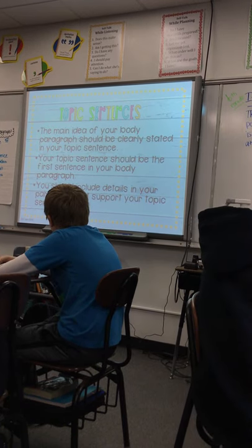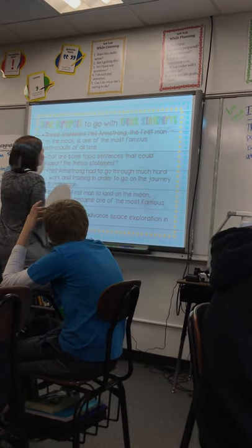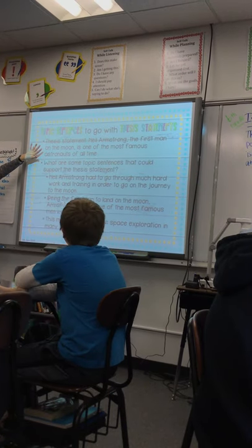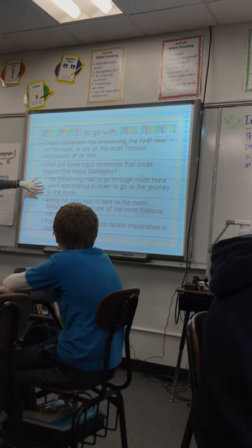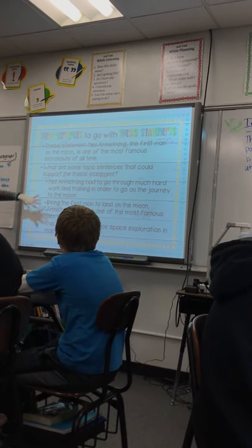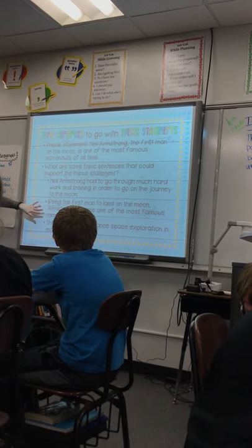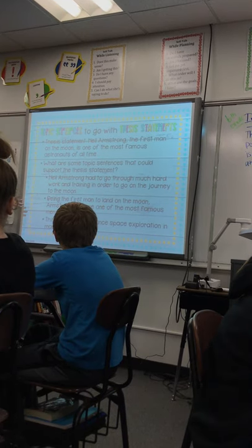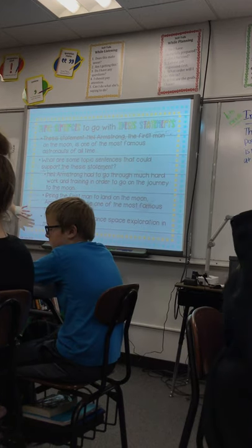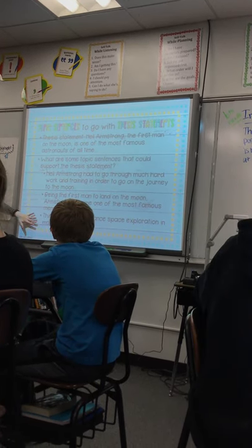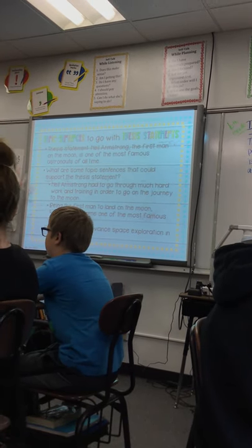Let's look at one more example. The thesis says: 'Neil Armstrong, the first man on the moon, is one of the most famous astronauts of all time.' So this paper is about Neil Armstrong. Paragraph one: 'Neil Armstrong had to go through much hard work and training in order to go on the journey to the moon' — his hard work and training. Paragraph two: 'Being the first man to land on the moon, Armstrong became one of the most famous men in history' — his fame from landing on the moon. Paragraph three: 'This man helped advance space exploration in many ways' — the ways he affected space exploration and the continued effects of that.